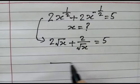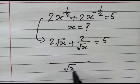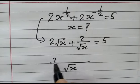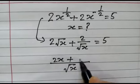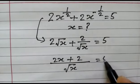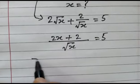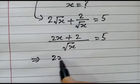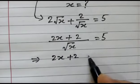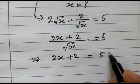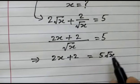If we take square root of x as LCM, here 2x plus 2 will be equal to 5. Now, in next step, 2x plus 2 is equal to 5 square root of x.